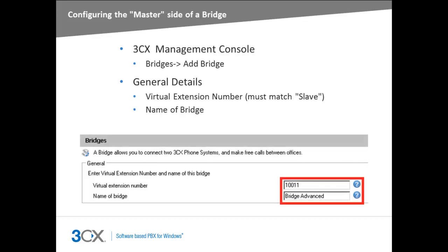We shall now look at the configuration of both a regular SIP RTP bridge and a tunneled bridge. From the 3CX Management Console, select the Bridges node in the sidebar and click the Add Bridge button. The first field on the page is the virtual extension number, which has already been suggested by the management console.